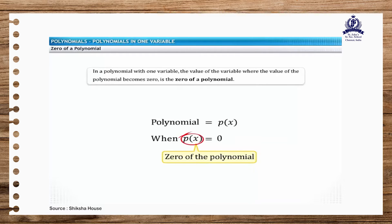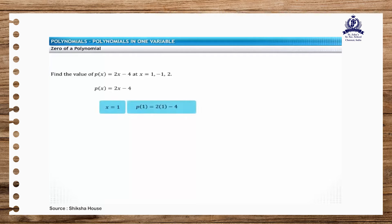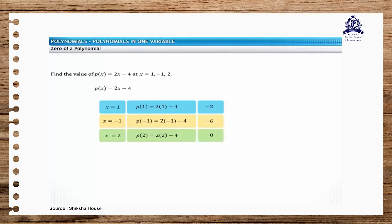Let's take up a problem as an example. Find the values of a linear polynomial p of x equal to 2x minus 4 at x equal to 1, minus 1, and 2. Substituting x with 1 in the polynomial, the value of the polynomial is minus 2. Similarly, the value of the polynomial for x equal to minus 1 and x equal to 2 is minus 6 and 0, respectively.